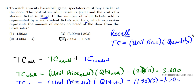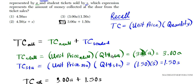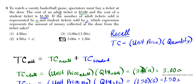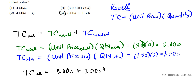For problem number three, you have to remember the formula for total cost. The total cost formula is the unit price multiplied by quantity. So in this situation we have adult and student tickets. We apply this formula twice to calculate the total cost for adult tickets and student tickets. From the problem you can extract the unit price and the quantity for adults and students, transform that into algebraic expressions, and then simply add them up to get your final answer, which is option number four.